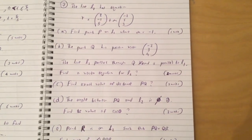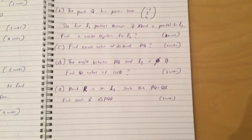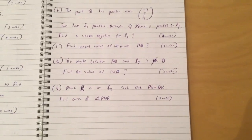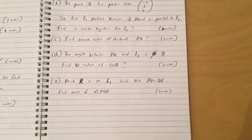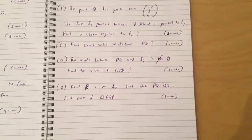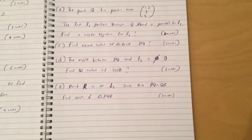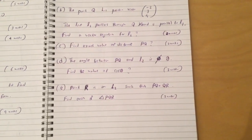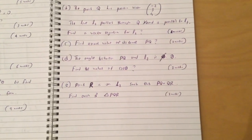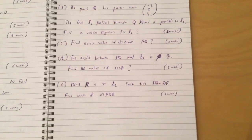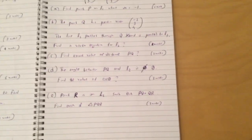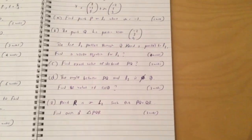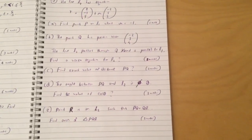Question 2: Find exact value of distance PQ. The angle between PQ and L2 is theta. Find the value of cos theta. Find R: Point R is on L2 such that PQ equals QR. Find area of triangle PQR. Okay guys, that's the C4 paper. I will post the solutions hopefully tomorrow or Thursday morning and good luck with that.